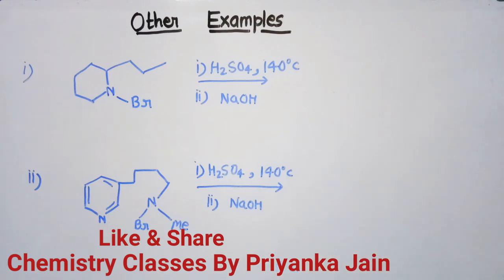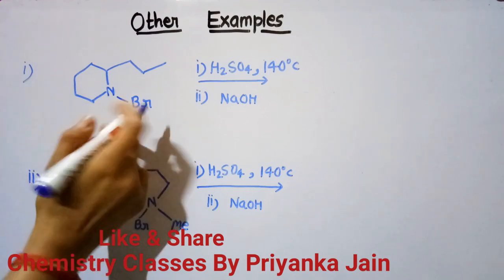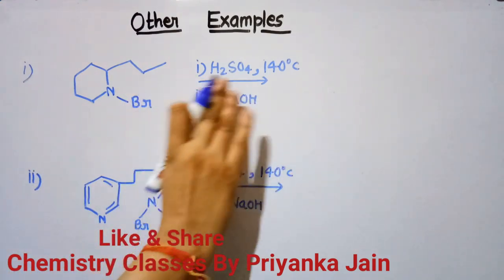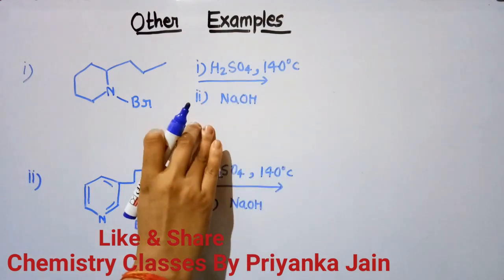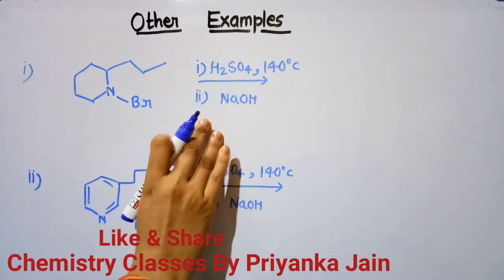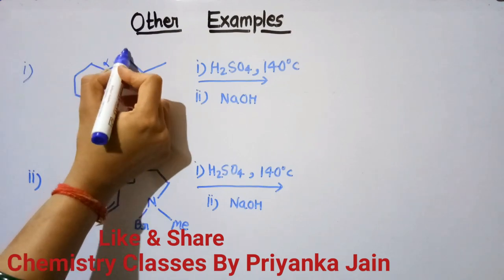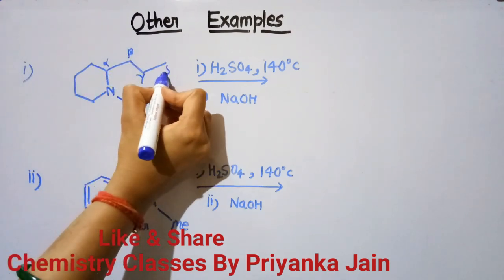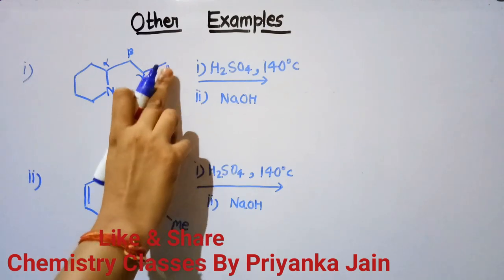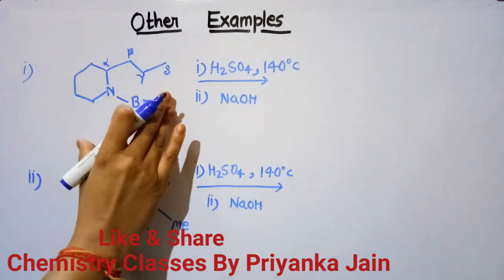Now we will see some examples where the Hoffman-Löffler-Freytag reaction is used in the synthesis of natural products. For example, there is a compound that is an N-haloamine. When this is treated with H₂SO₄ at 140°C and then further treated with NaOH (a base), we can see this N-haloamine has alpha, beta, gamma, and delta positions, with hydrogens at the delta CH₃ group. So this will undergo the Hoffman-Löffler-Freytag reaction.